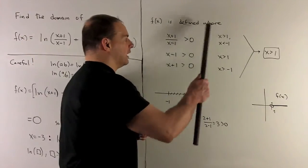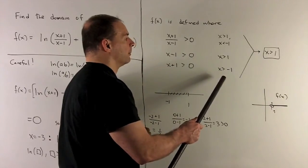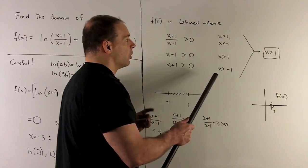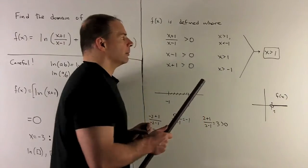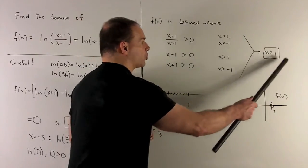Now to get all three of these to work at the same time, what's going to happen is we're going to be left with x greater than 1. So that's going to be my domain, x greater than 1.